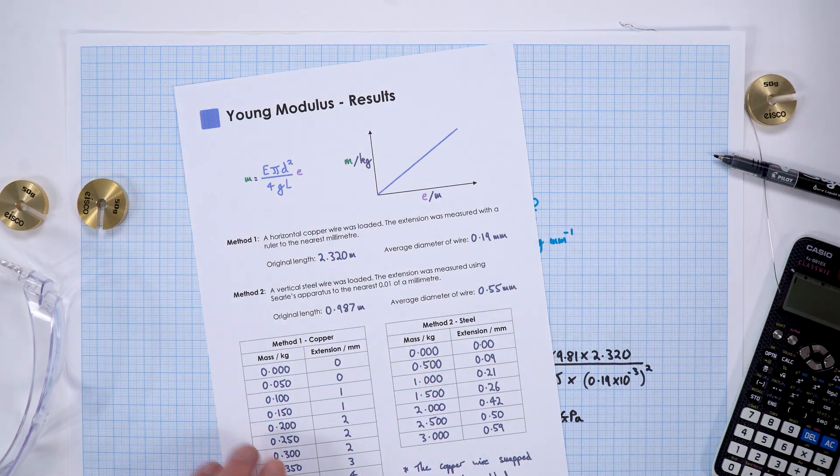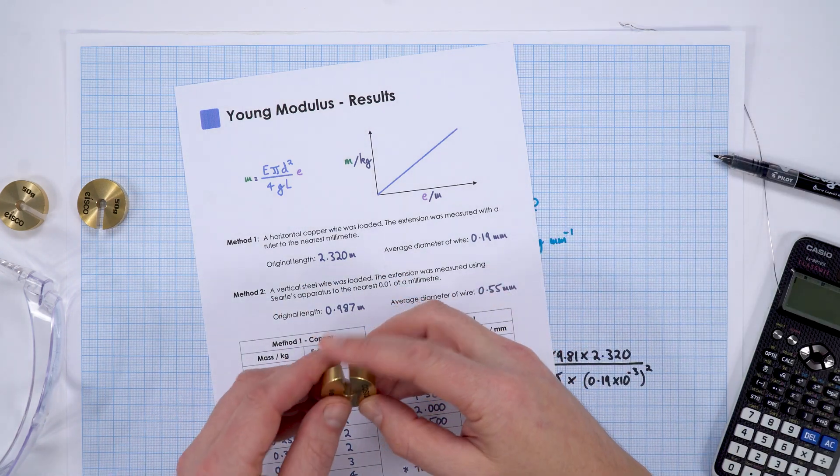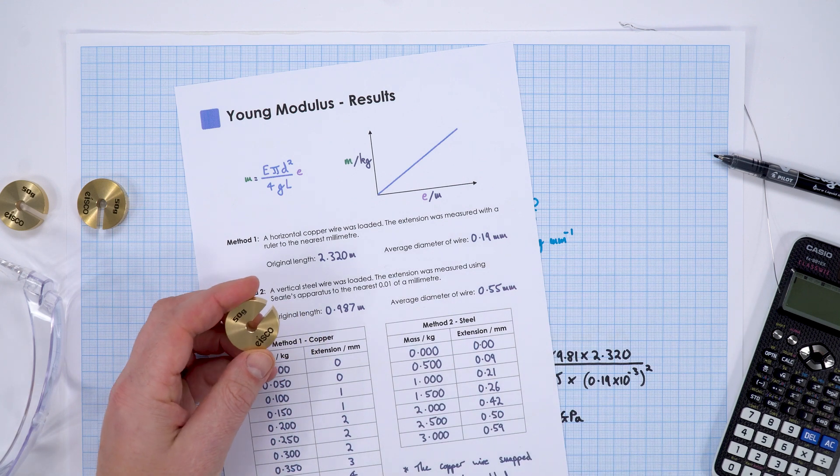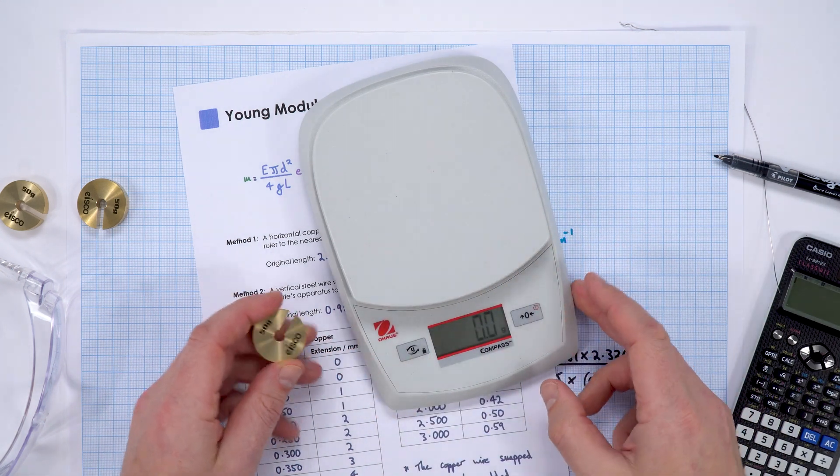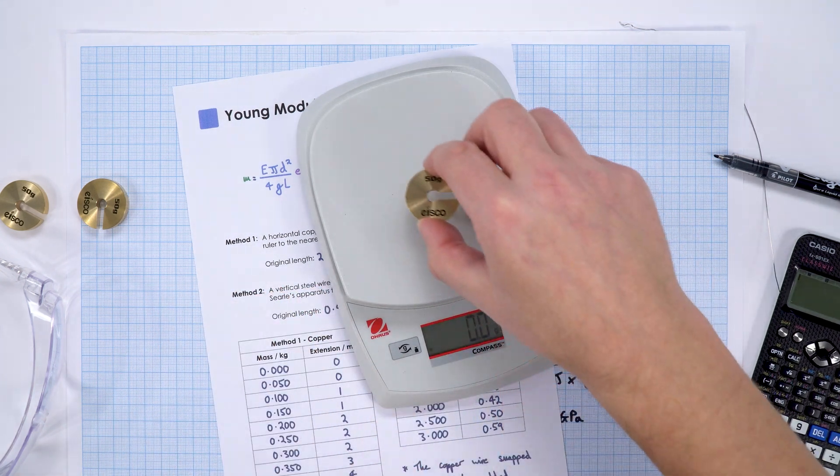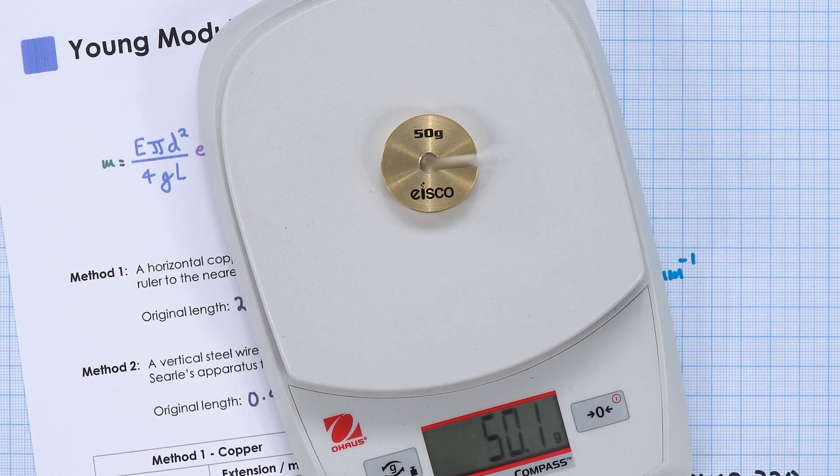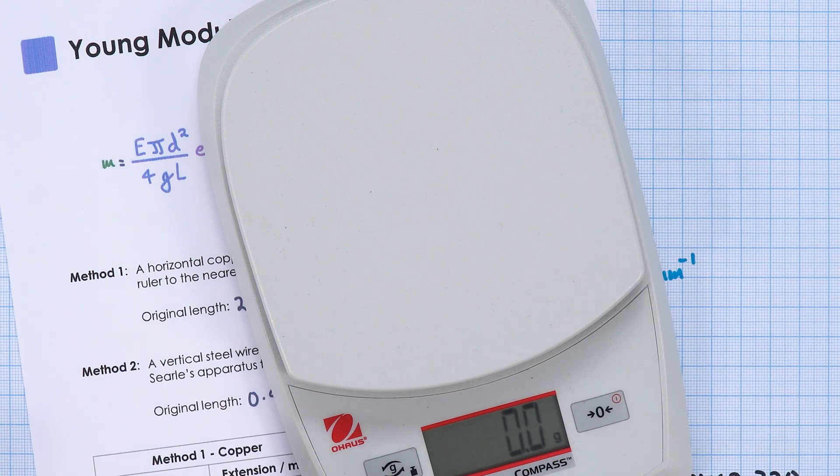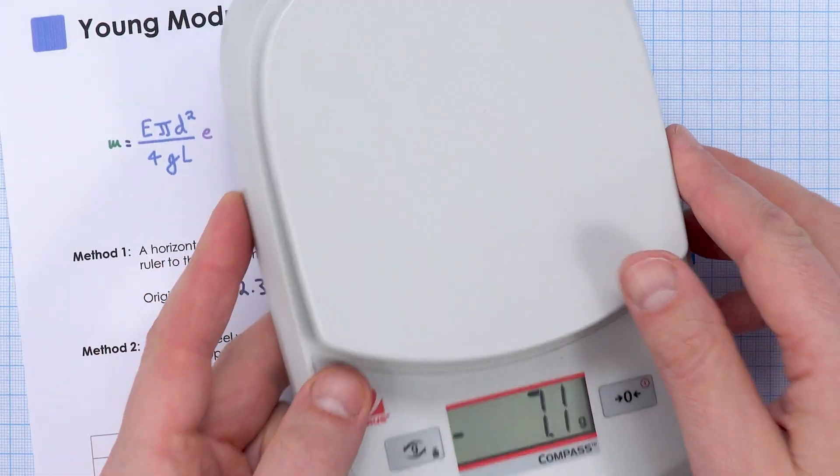I loaded it up with these 50 gram masses. I also checked that these are actually 50 grams. If we put it onto the scales here, this 50 gram mass has 50.1 grams. I did that for all of them, so they're all within 0.1 or 0.2 of a gram.